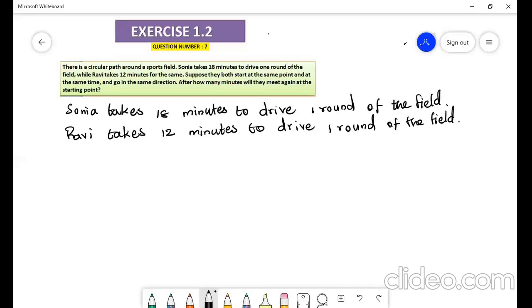Sonia takes 18 minutes to drive one round of the field, therefore Sonia reaches the starting point respectively in 18 minutes, 36 minutes, 54 minutes, and so on. Ravi takes 12 minutes to drive one round of the field, therefore Ravi reaches the starting point...